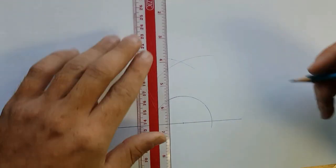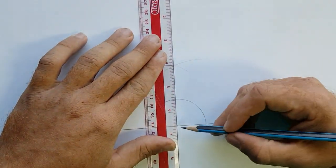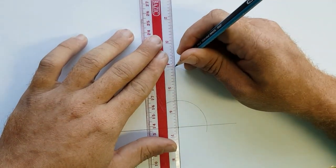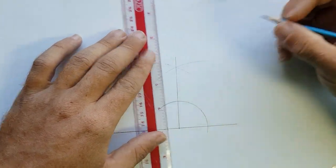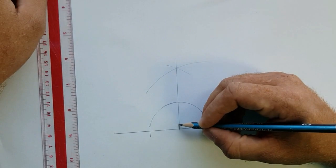Where the arcs intersect, we connect that point to our vertex. We have just constructed 90 degrees.